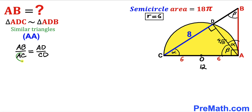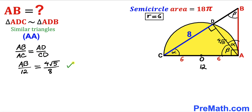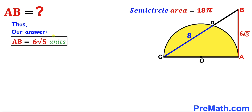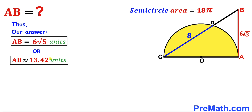We know AC = 12, AD = 4√5, and CD = 8. Substituting these values: AB/12 = 4√5/8. Multiplying both sides by 12 to isolate AB, we get AB = 12 × (4√5/8) = 6√5 units, which is approximately 13.42 units. That's our final answer.